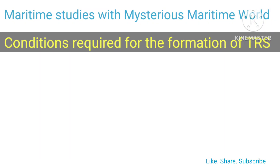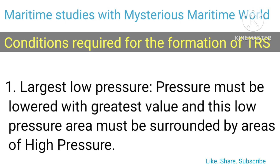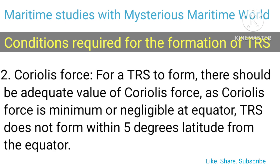Conditions required for the formation of a Tropical Revolving Storm (TRS): largest low pressure, adequate amount of Coriolis force, warm temperatures of the ocean, sufficient depth, relative humidity, potentially unstable atmosphere, and limited vertical wind shear. The low pressure must be lowered to its greatest value and must be surrounded by areas of high pressure.